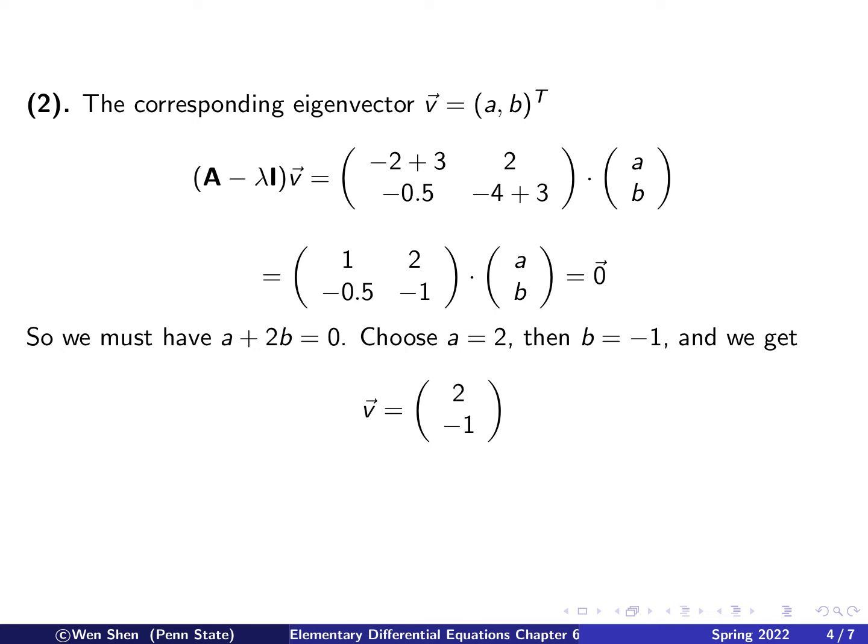So you can choose any convenient number. So here I chose A to be 2, B to be negative 1. You can do other numbers. And then we have a V vector. The eigenvector is 2, negative 1.